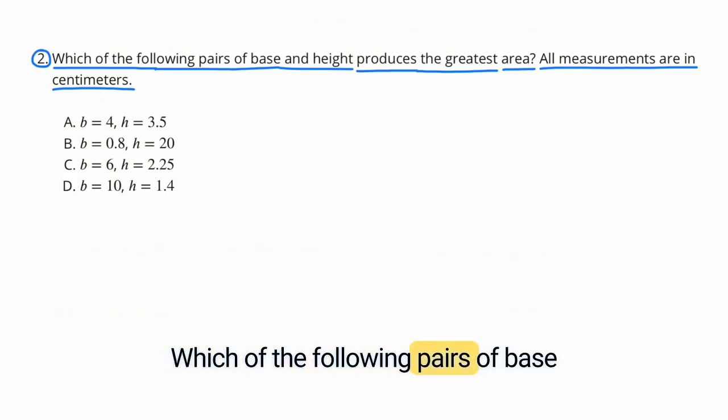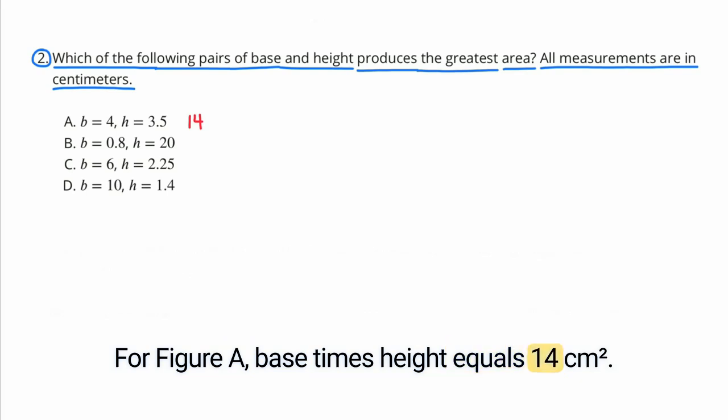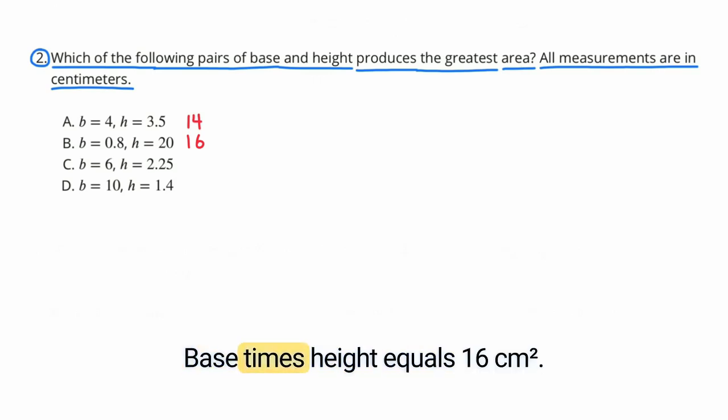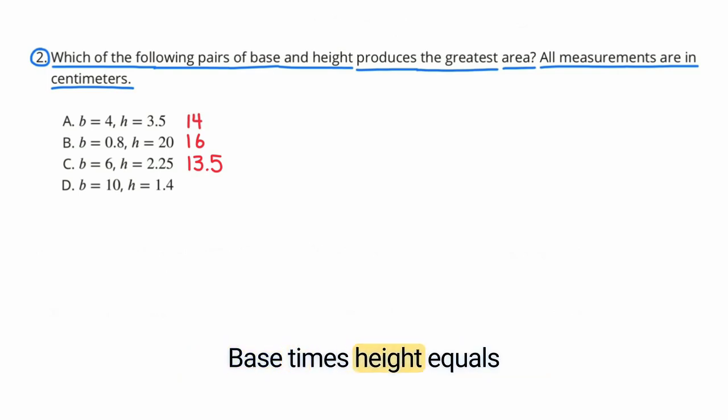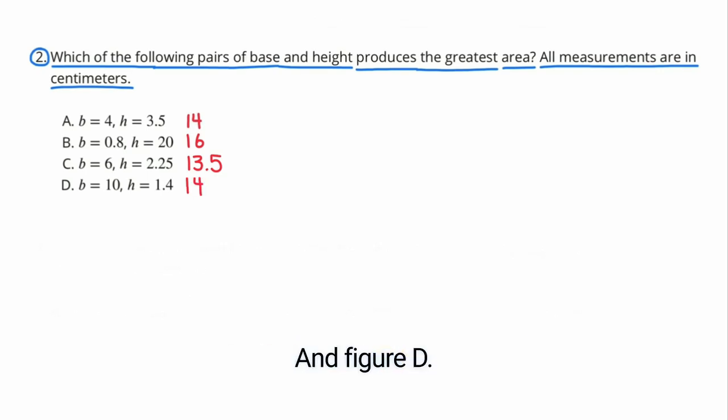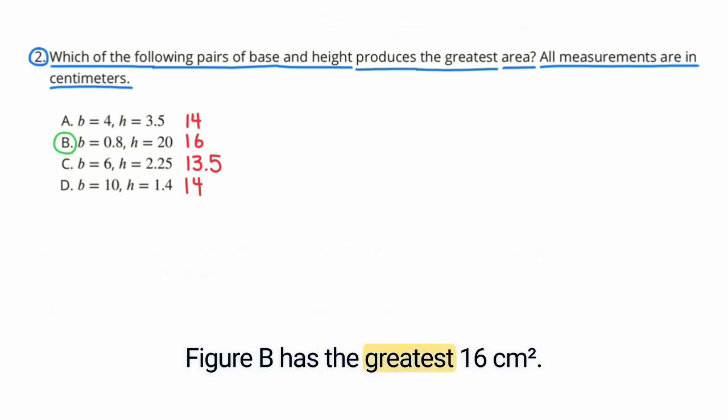Number 2. Which of the following pairs of base and heights produce the greatest area? All measurements are in centimeters. For figure A, base times height equals 14 square centimeters. Figure B, base times height equals 16 square centimeters. Figure C, base times height equals 13 and 5 tenths square centimeters. And figure D, base times height equals 14 square centimeters. Figure B has the greatest area, 16 square centimeters.